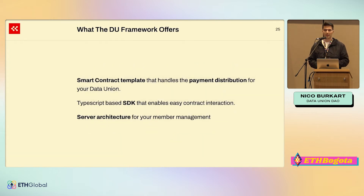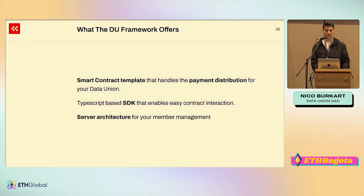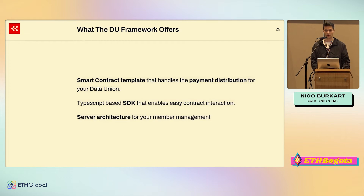The Data Union DAO offers the data union framework. This contains a smart contract template that handles payment distribution for the data union, and a TypeScript-based SDK that handles all the interaction with the smart contract. The SDK is an NPM package. We also offer server architecture for your member management.